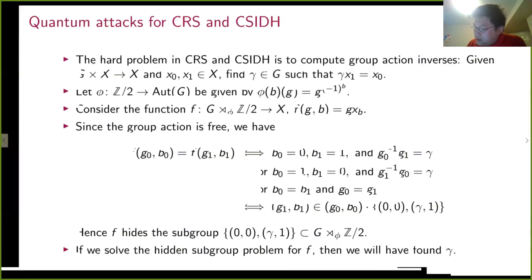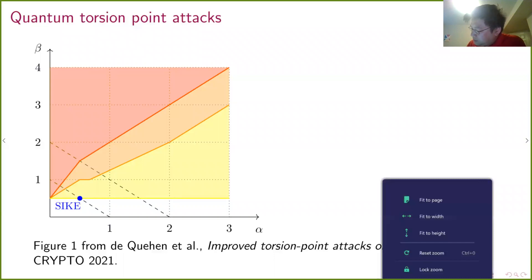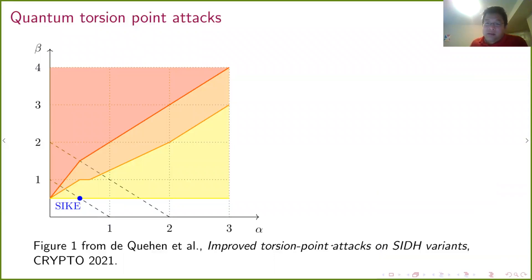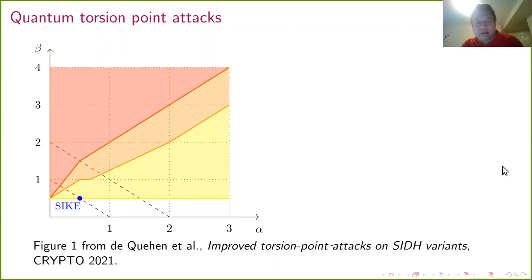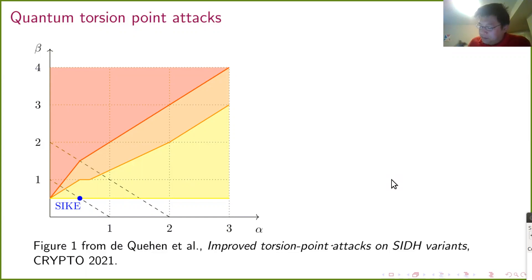All of the above is classical, but you can use quantum algorithms to speed things up — using Grover search or similar to find the degree-n isogeny a bit faster or to solve the Diophantine equation faster. If you do all that, you get a speedup for most possible parameter sets.